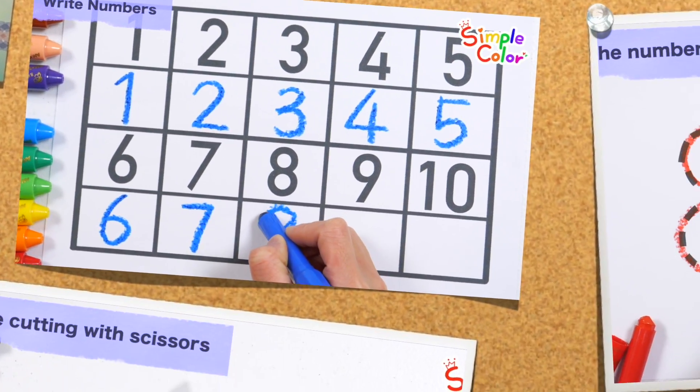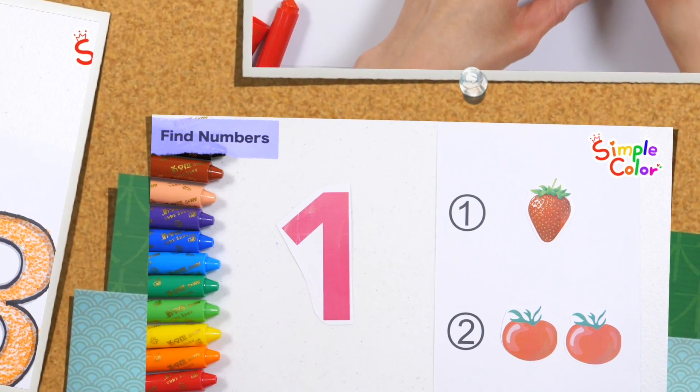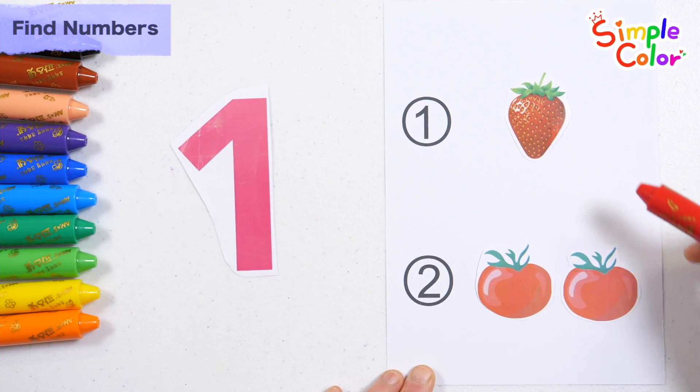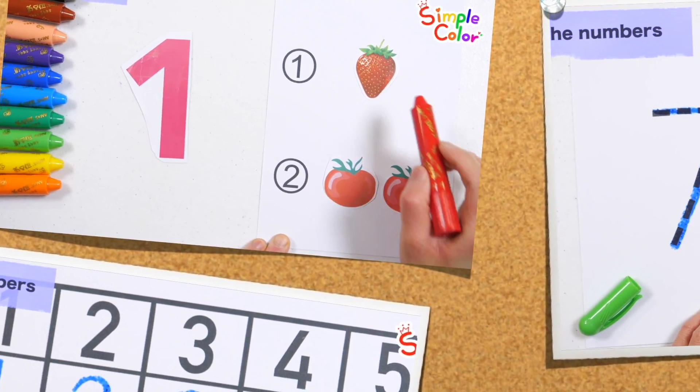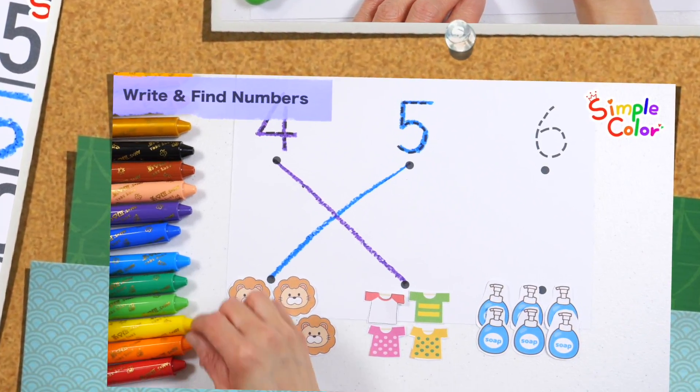Today, we will learn numbers 1 to 10. It is designed to help children understand the concept of numbers by guessing what the number behind the colored paper is and finding pictures that match the number.